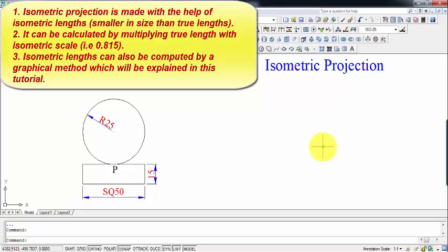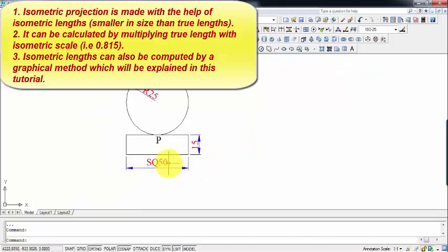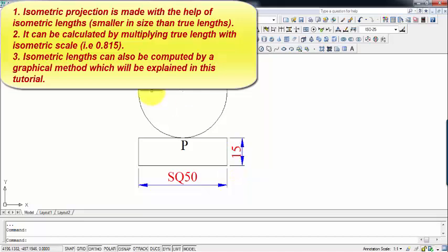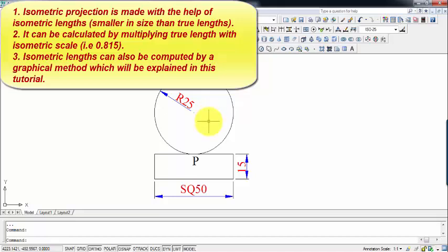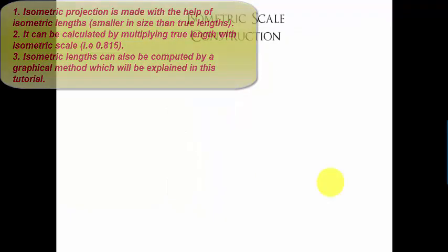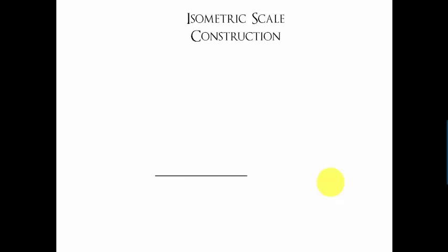So let's start with this orthographic projection which we are going to convert into isometric projection. For that, we initially have to start off with an isometric scale construction. Now we have three different dimensions: 50 as the highest dimension, then we have 15 and this radius is 25. So what we're going to do is we'll initially construct this isometric scale. We are going to draw a baseline, and from this line at an angle of 45 degrees, the highest dimension has to be made. So the angle is going to be 45 degrees and this is a 50 mm long line.